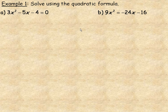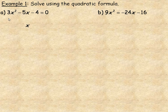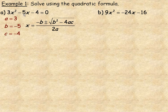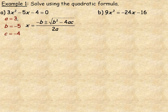In Example A, our quadratic equation is 3x squared minus 5x minus 4 equals 0. Write down your formula, then identify a, b, and c: a equals 3, b equals negative 5, and c equals negative 4. The next step is to fill 3, negative 5, and negative 4 in place of a, b, and c in the formula.